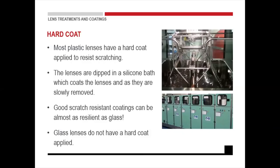Let's look at hard coating. A hard coat usually protects the lens from scratching, but keep in mind a hard coat is not scratch-proof. Most plastic lenses have a hard coat applied to resist scratching — resist scratching does not mean scratch-proof. The lenses are dipped in a silicone bath, which coats them as they are slowly removed. Good scratch-resistant coatings can almost be as resilient as glass. Glass lenses do not have a hard coat. A hard coat is also the base of all coatings — any ARC coating always has the hard coat applied as the base coat.